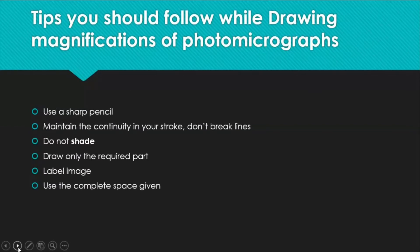We may have come across magnification questions in our ATP paper in IGCSE Biology, so this is not new. Here are some conditions to follow while drawing a magnified image — and this is a recap. Use a sharp pencil, not a blunt one, to make your drawing crisp and detailed. Maintain continuity in your stroke; do not break lines or make them feathery. Do not shade, as it is not accepted. Read the question twice and draw only the required part.